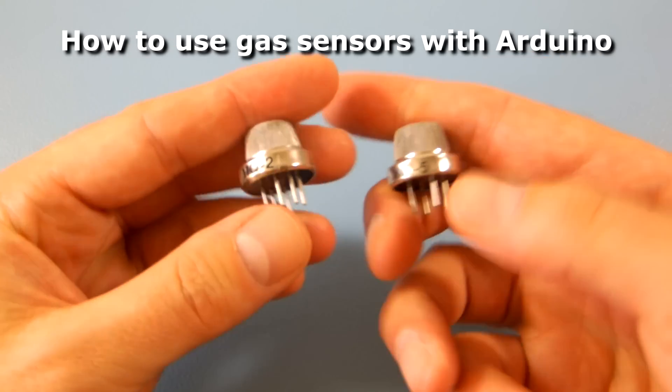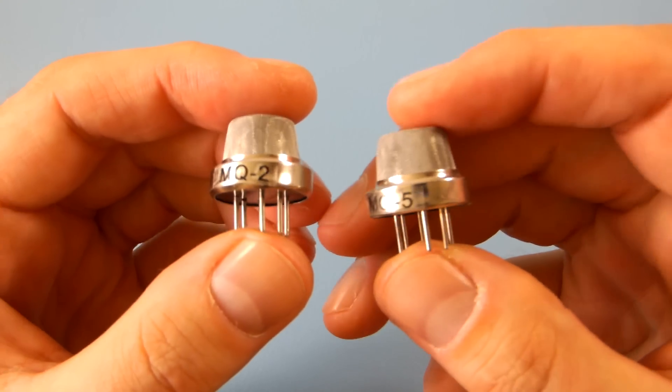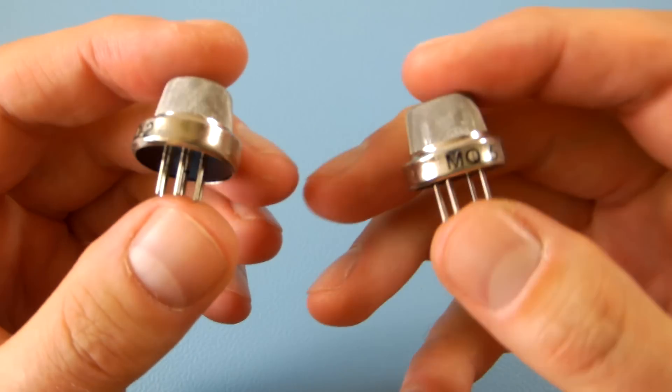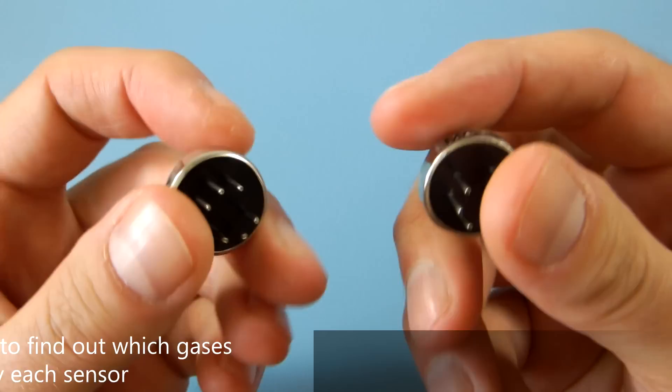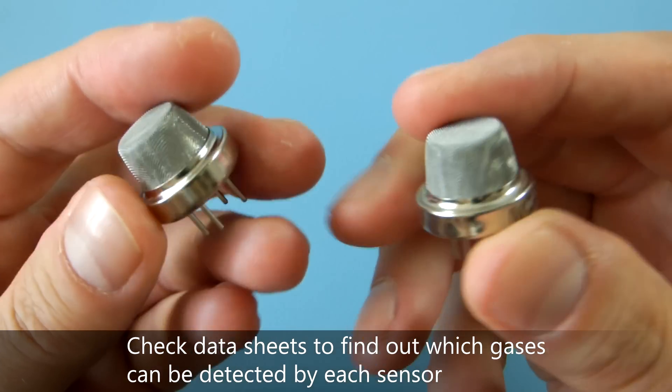Hi, these little guys are MQ2 and MQ5 gas sensors. They look identical and you can probably tell them apart only by the labels. Both require exactly the same connections but they detect different gases.